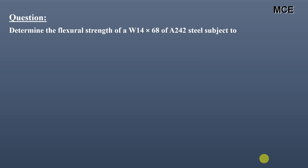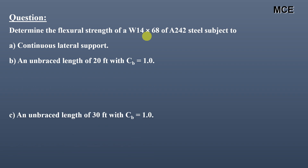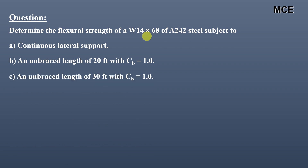Hello and welcome back to Master Civil Engineering. In this video we will learn how to find the flexural strength of a steel beam according to the AISC specifications. The question given requires us to find the flexural strength of steel shape W14x68 of A242 steel subjected to: a continuous lateral support, an unbraced length of 20 feet with CB equal to 1, and an unbraced length of 30 feet with CB equal to 1.